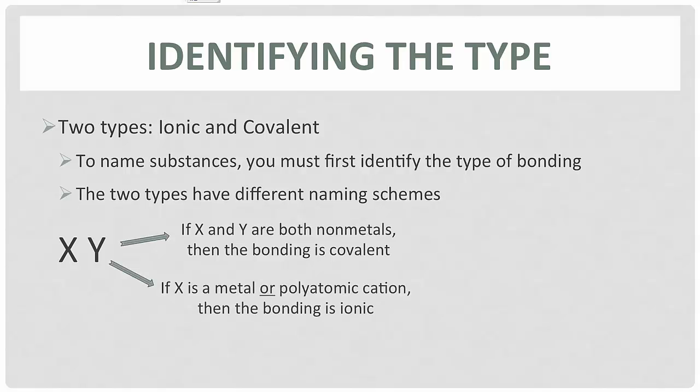If X is a metal or polyatomic cation, then our bonding is going to be ionic. A good clue for you is if you also see Y as a polyatomic anion, most of the time that will imply we've got an ionic compound. However, I'm going to show you an example where that's not the case in just a second. Let me show you a bunch of molecules here and see if you can identify whether it's covalent or ionic.